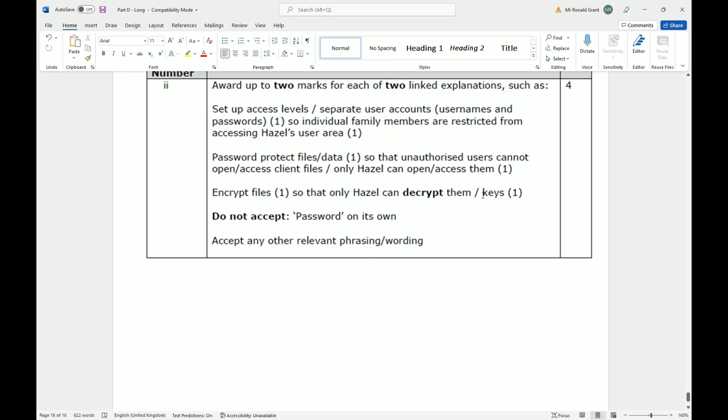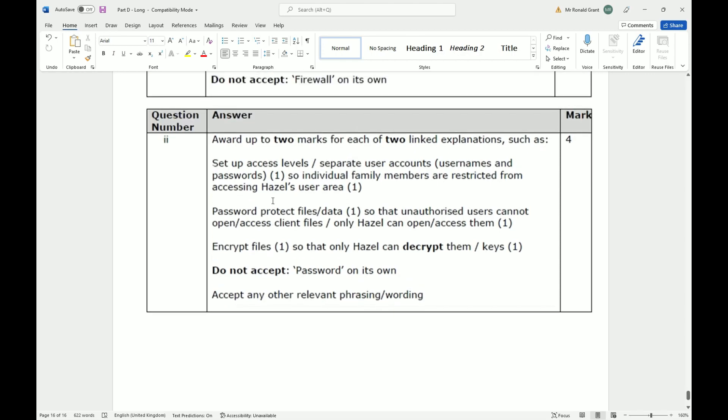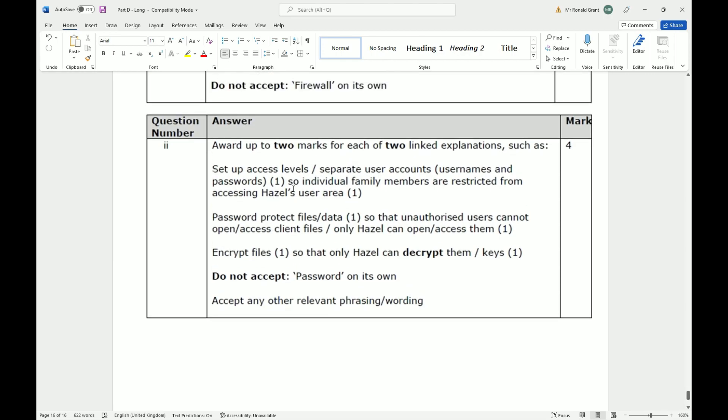You can also encrypt files so that only Hazel can decrypt them with a key. Sometimes you can buy these memory stick looking things which are decryption keys, hardware decryption keys. It's more or less the same as password protecting, but encrypting is slightly different. Essentially, think of it as plugging in a memory stick to decrypt it, and only you will have that key to decrypt it—no one else. These are the options you could use for that question there.